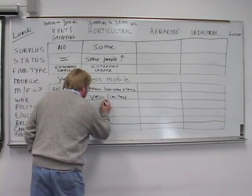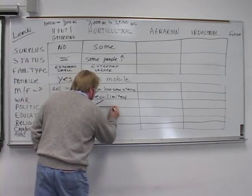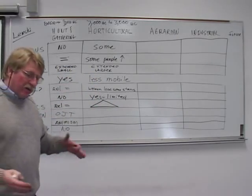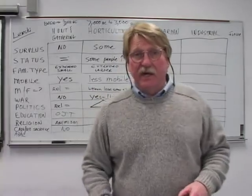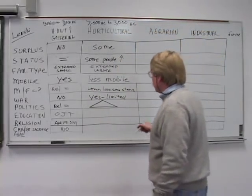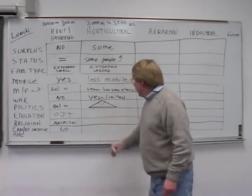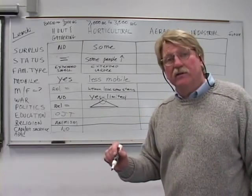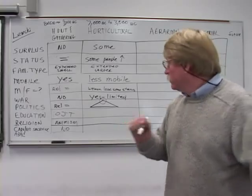Politics starts to develop more of a pyramid shape. Still a fairly low flattened pyramid early on, but the further you get into the society, you get some people in charge. And they tend to be religious political leaders who are controlling what? The surplus. They're controlling the surplus.